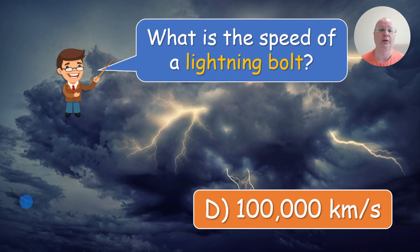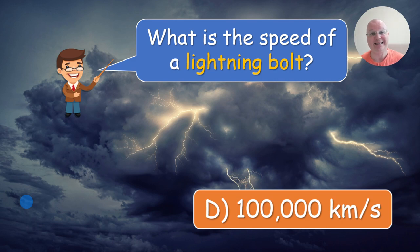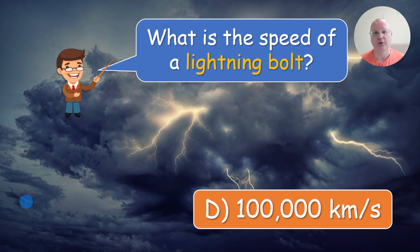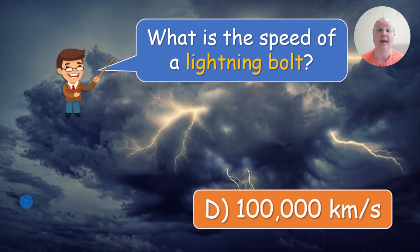In one of my classes, a student told me I was wrong — that lightning essentially is light, so it should travel at the speed of light. You can say that light and lightning are two different things. Lightning is a form of electricity traveling in a wire, caused by flowing, moving electrons. You don't need to go deep into that — just tell them that light and lightning are different things, and lightning is a form of electricity. That's why it does not travel at the speed of light.